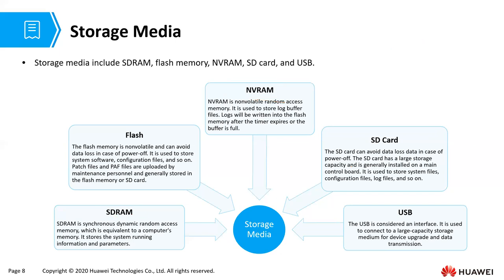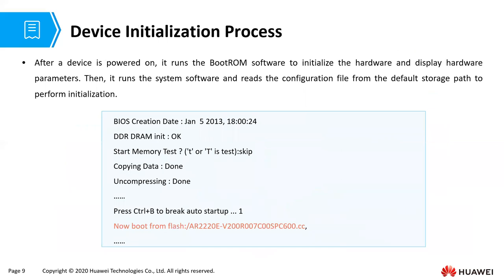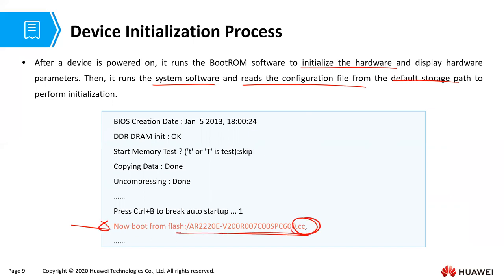Those are the five kinds of storage that most of our devices support. For our device to initialize when we power it on, it runs the boot ROM — the boot read-only memory software — to initialize the hardware and display hardware parameters. After that, it runs system software, which is the VRP, and reads the configuration file from the default storage path to perform initialization. It loads the VRP image, which is a .cc file, and then loads the configuration file .cfg stored in the device to load the initial configurations that were saved.